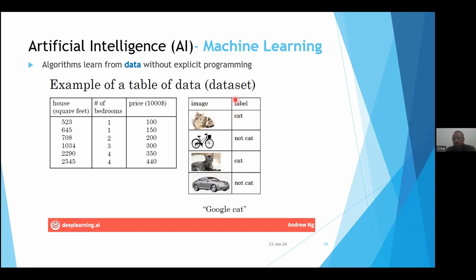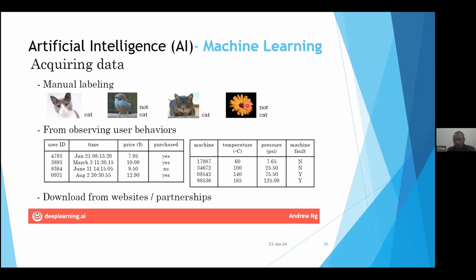If we have a categorical type of label in our dataset, it is a classification machine learning problem. If we have a quantitative variable, it is a regression supervised machine learning problem. We call it supervised because we know the output — the category or label. If our dataset has a label associated with it, it is called a labeled dataset, and this is supervised machine learning — data which has both input and output.